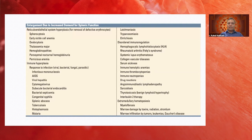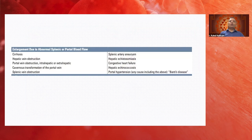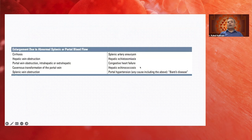Splenomegaly also occurs in extramedullary hematopoiesis when bone marrow is non-functional — seen in myelofibrosis, thalassemia major, marrow damage from toxins or radiation, and marrow infiltration by tumor, leukemia, Gaucher's disease, or amyloidosis. Abnormal splenic blood flow causes include cirrhosis, hepatic vein obstruction, portal vein obstruction, cavernous transformation of the portal vein, splenic vein obstruction, splenic artery aneurysms, hepatic schistosomiasis, congestive cardiac failure, echinococcus, and portal hypertension — all leading to congestive splenomegaly.